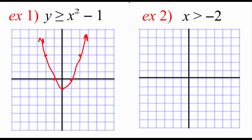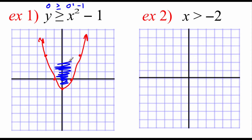Now we have to decide what portion of our graph to shade. To do that, it's helpful to pick a test point that is not on the line of our graph. Zero, zero is a nice point we could pick. So we plug in zero for our x and y and see if our inequality is satisfied: zero is greater than or equal to zero squared minus one. Zero squared is zero, and if we subtract one that's negative one. So this is saying zero is greater than or equal to negative one, and that's a true statement. So we're going to shade the region where that test point was located.